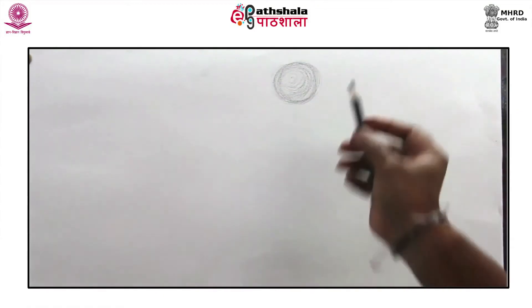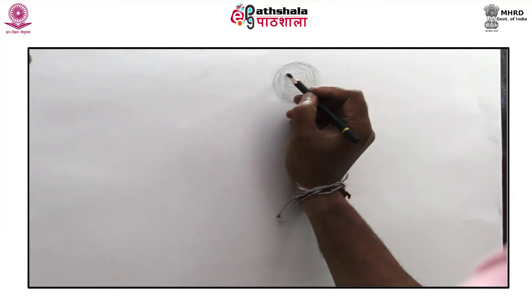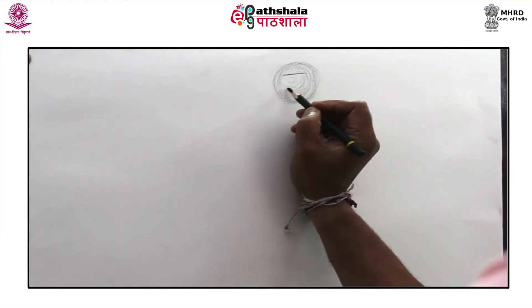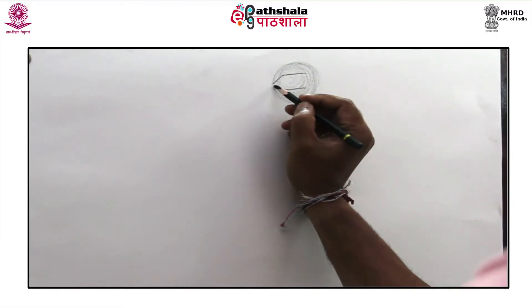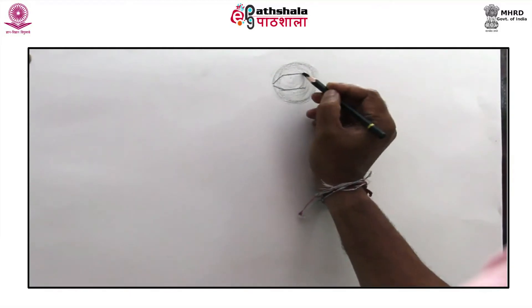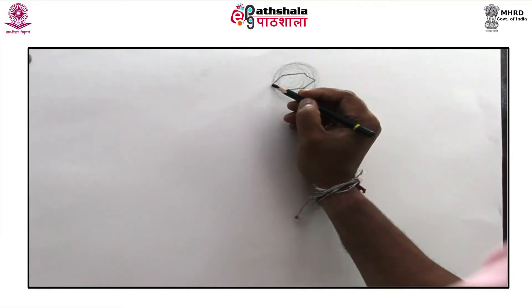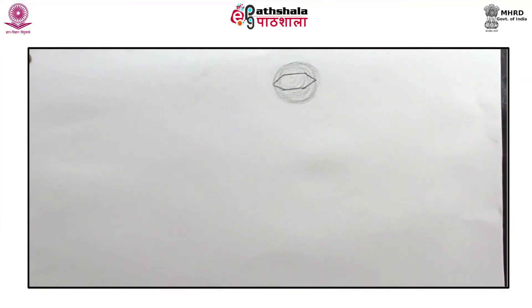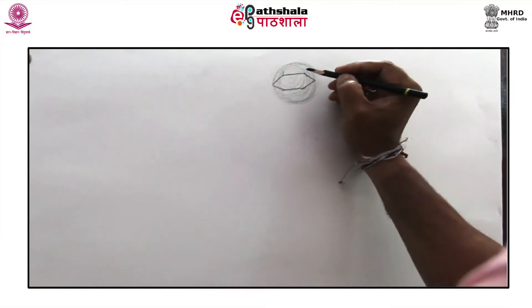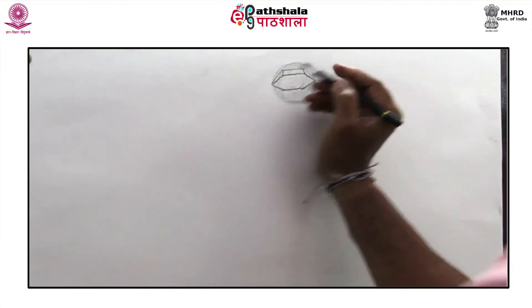In drawing eyes, the circle includes the eyelid and the puffy area under the eye too. Draw the first eye shape in geometrical view. Triangles, cylinders and cubes will form the external structure of the eye.